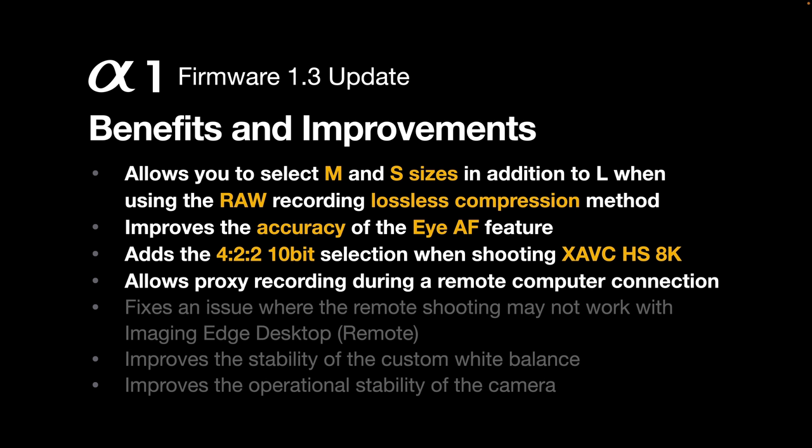First off, it allows you to select M and S sizes — that's medium and small sizes of RAW files — when shooting in the lossless compression RAW file format. This has been a feature offered by Canon and Nikon cameras previously, but this is the first time it's being offered by Sony Alpha cameras.